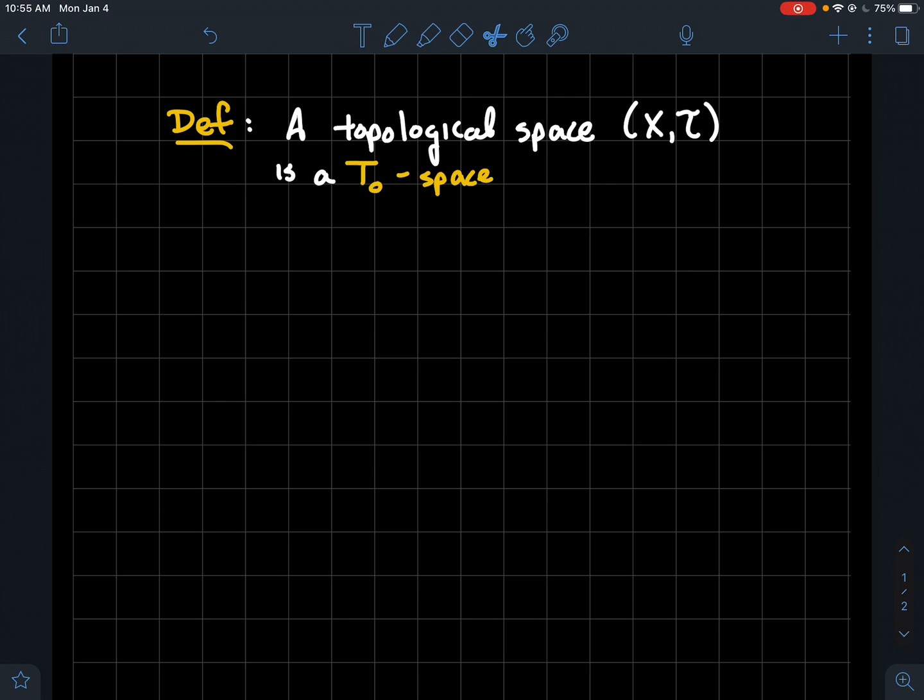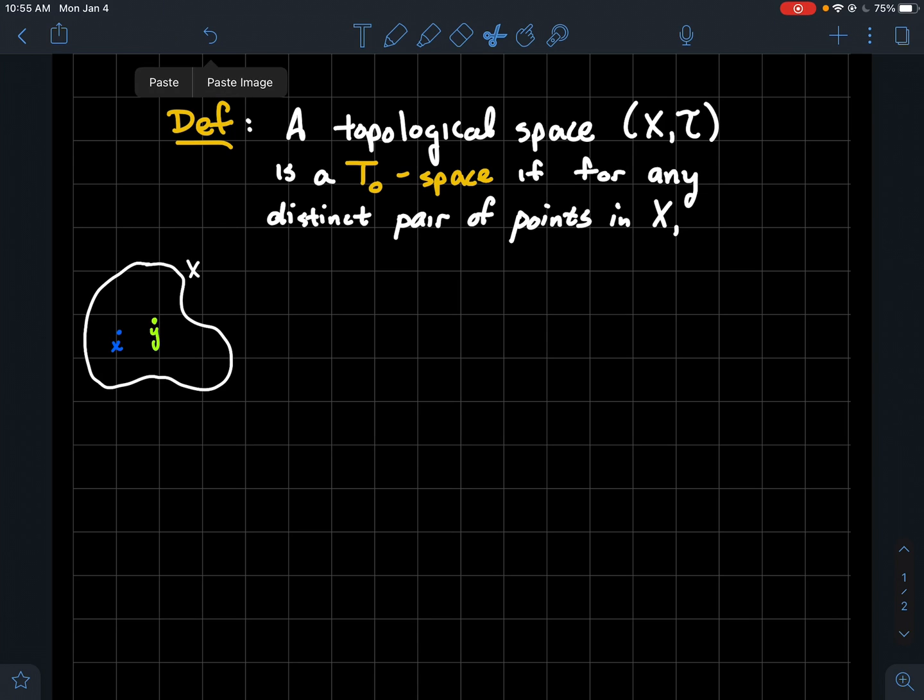We're going to say that the topological space (X,τ) is a T₀ space if—I'm going to draw you a picture as we go through the definition—so here's my set X over here. For any distinct pair of points in X, let's say you got x and y, so they're distinct, we're not assuming that they're equal.